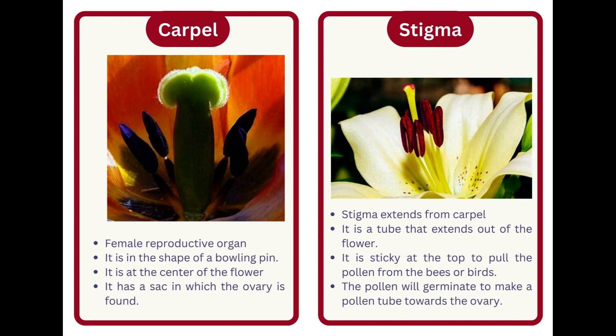Stigma. Stigma extends from the carpel. It is a tube that extends out of the flower. It is sticky at the top to pull the pollen from bees or birds.